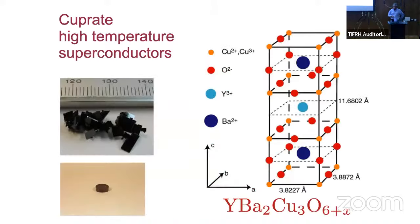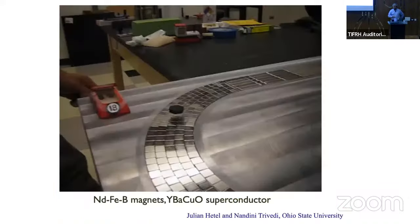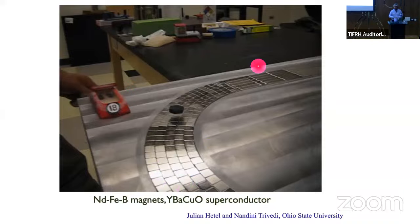For example, there is a family of superconductors called the cuprate high-temperature superconductors that were discovered in 1986. These have the property that they can go superconducting at much higher temperatures. You can just put them in liquid nitrogen in a tabletop experiment, and there is this little piece of YBCO — as we call it — that goes superconducting.